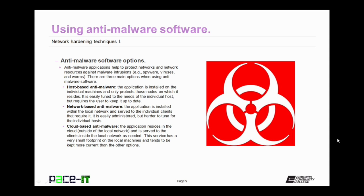Anti-malware applications help to protect networks and network resources against malware intrusions — such as spyware, viruses, and worms. There are three main options. First, host-based anti-malware: the application is installed on individual machines and only protects those nodes on which it resides. It's easily tuned to the needs of the individual host, but requires that the user keep it up to date.